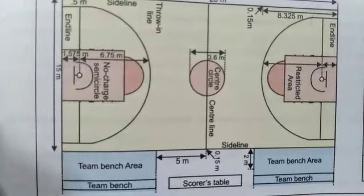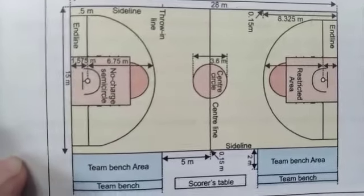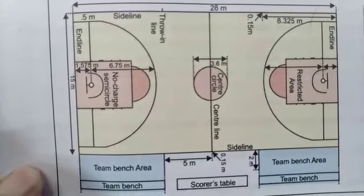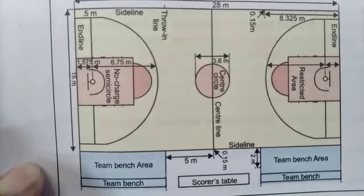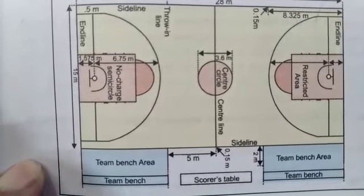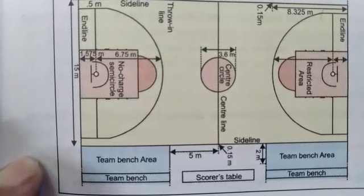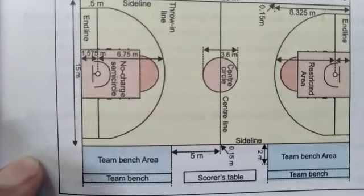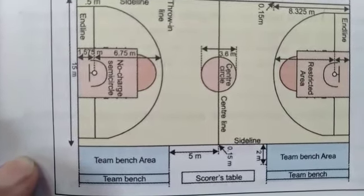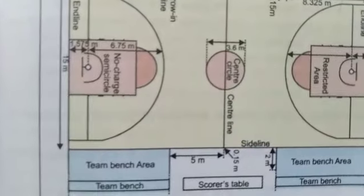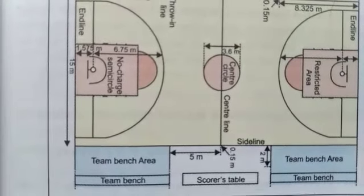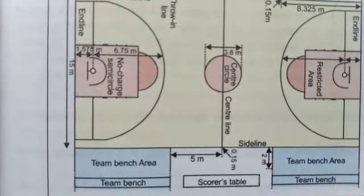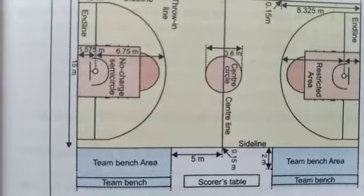In the figure you can see the basketball court: side line 28 meters, end line 15 meters, center circle, team bench area, score table, restricted area, and center line.